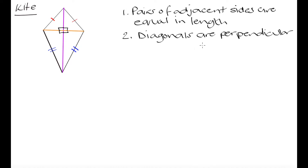We also saw that in the rhombus and the square, the diagonals bisected each other at 90 degrees — they were perpendicular to one another. So if these are the only two criteria we need to satisfy, the rhombus and the square will also satisfy them. While the rhombus and the square can be thought of as part of the kite family as well as the parallelogram family, the kite is not a parallelogram, because we do not have any parallel sides in our kite. So the kite is going to be its own family.